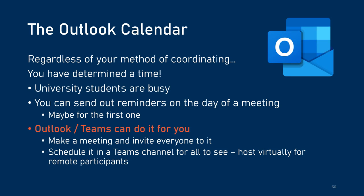Regardless of the method of coordinating a team meeting time, let's say you've figured out a time. University students are very busy, and one thing I'd recommend is sending out reminders on the day of a meeting, particularly the first time it's meeting in a semester or the first time on a new meeting time. But you don't want to do this over and over again. You can actually set up a calendar event in Outlook or Teams — you can schedule it in a Teams channel so anyone can see when the meeting's happening, and you can even use this to generate a Teams link and host a meeting virtually for remote participants.